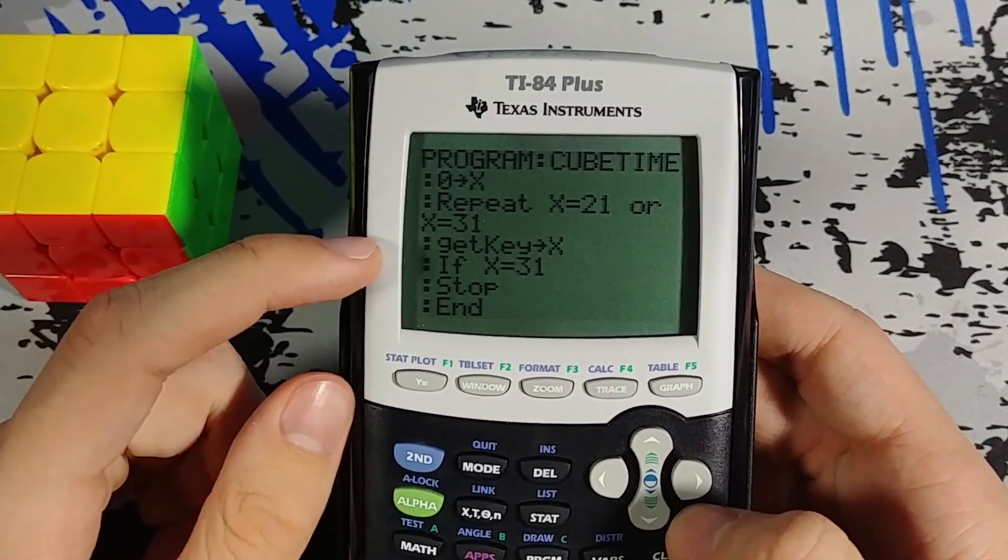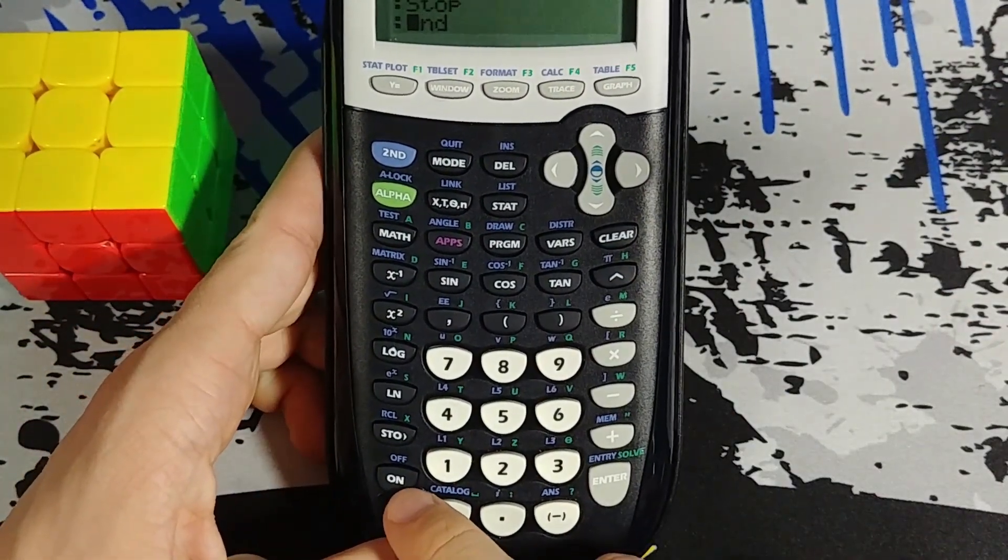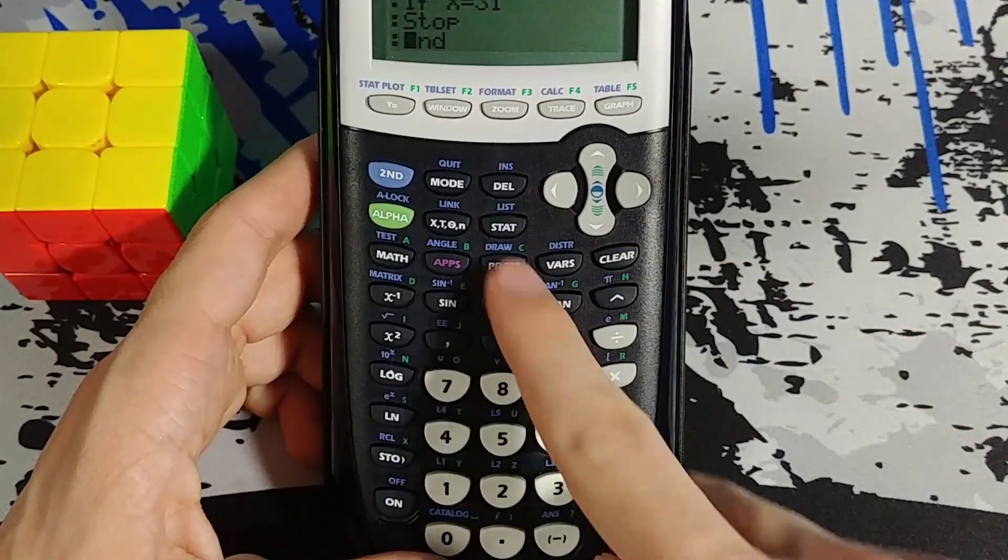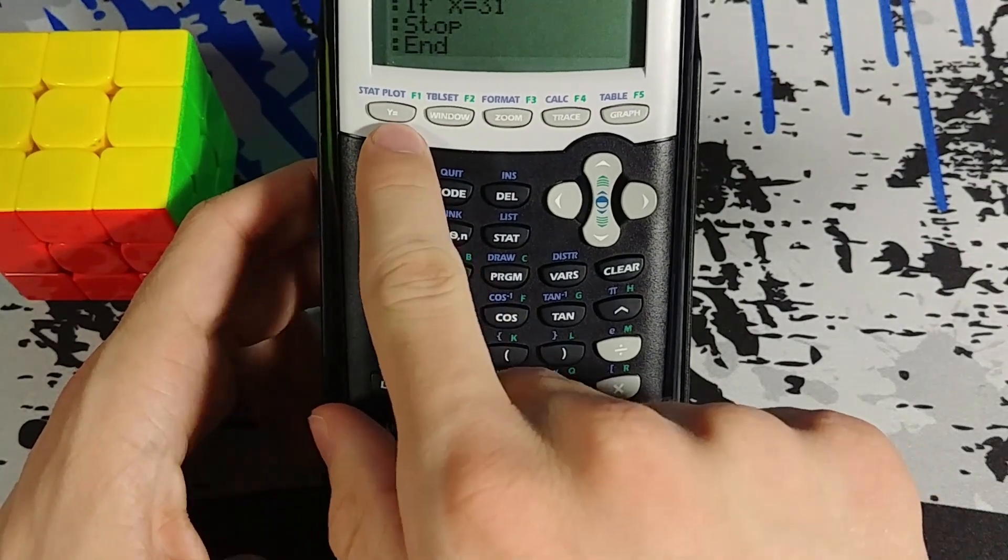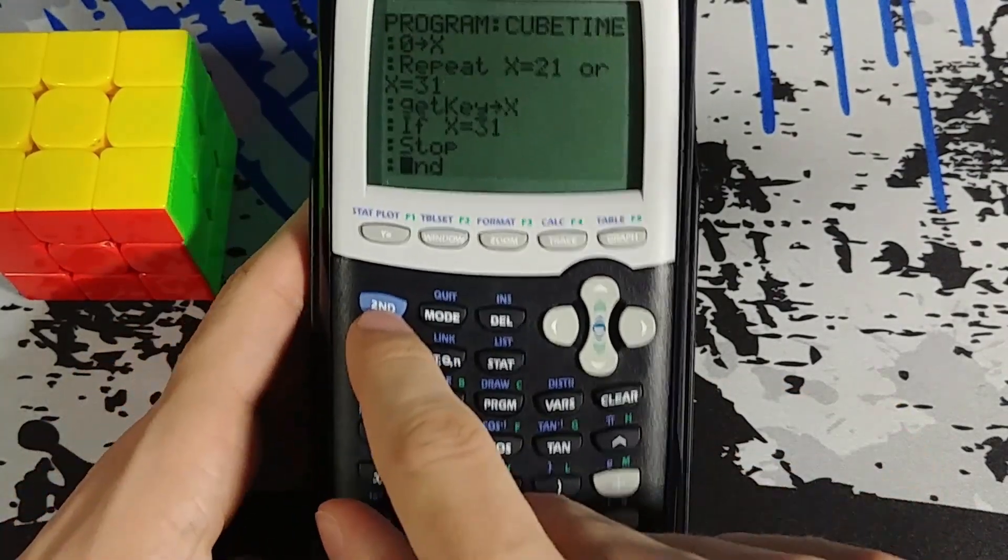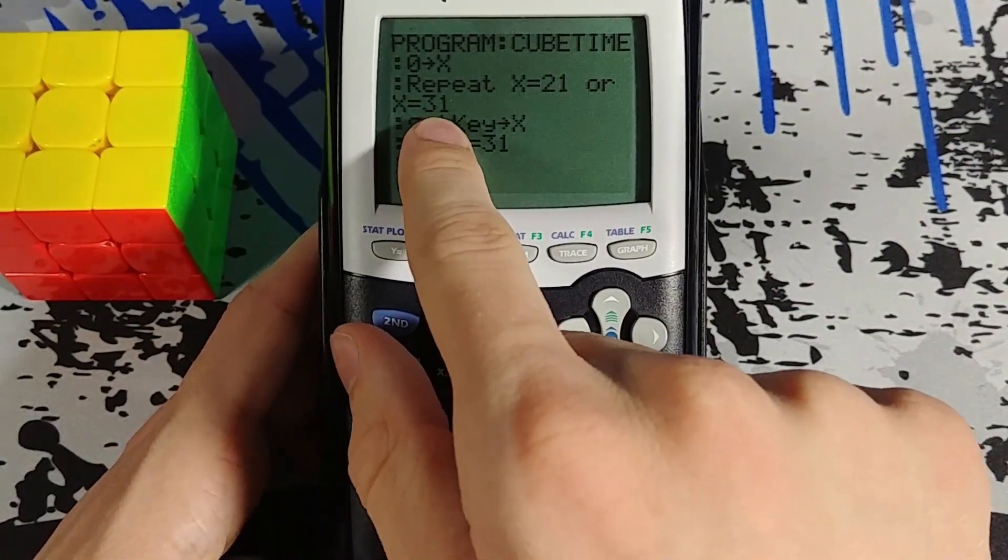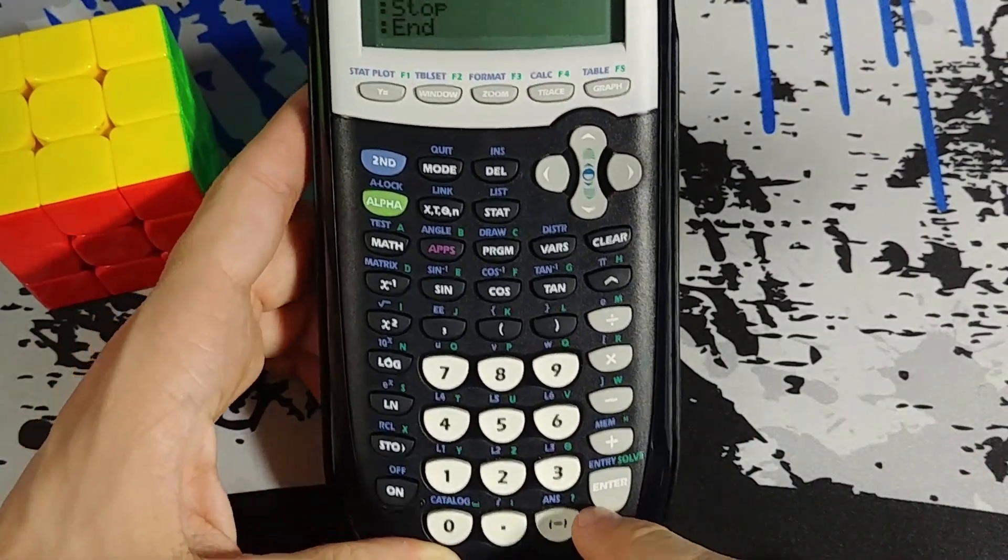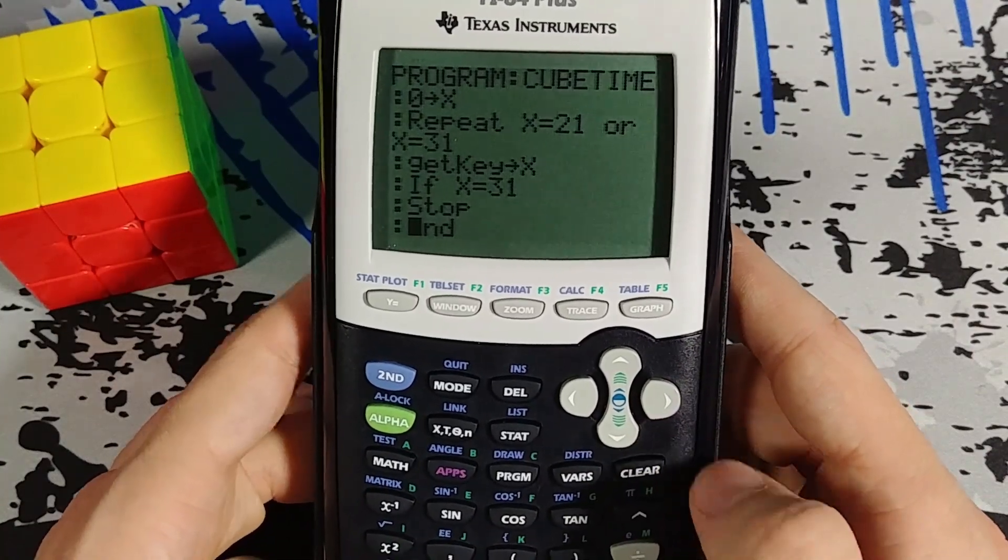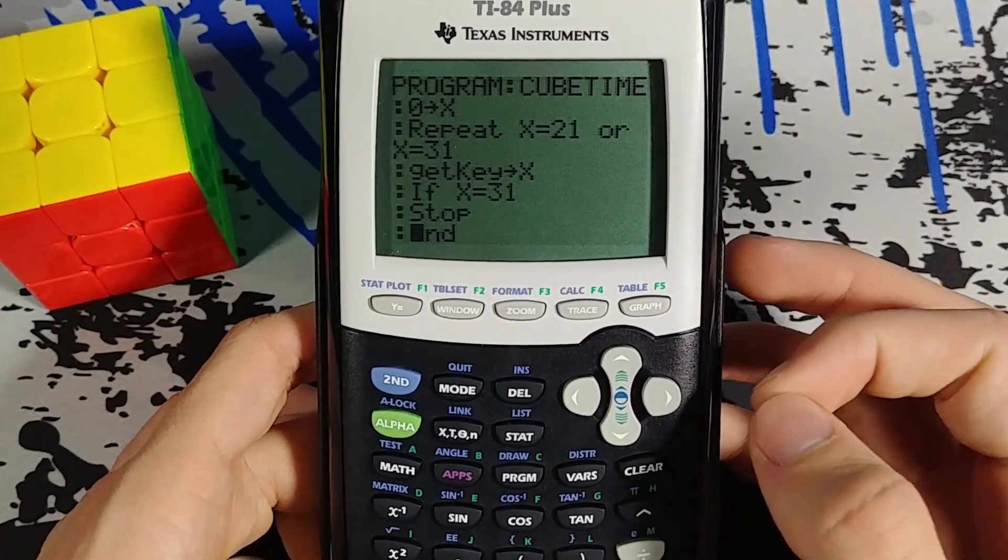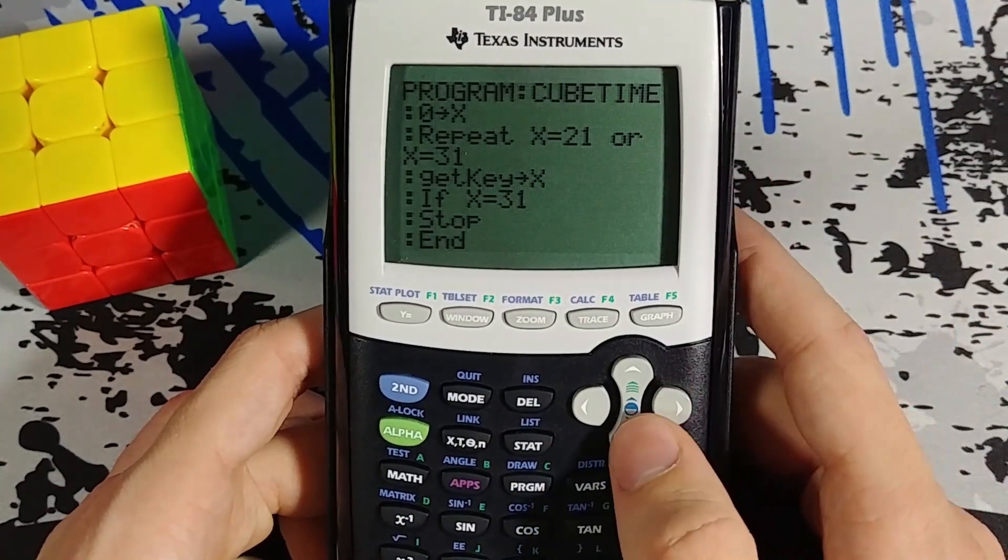And it's going to ask me get key. So each of the keys on here, besides the on button because that breaks programs, all of them are assigned a number based on the row and column. So this is row one, column one, so it's 11. Row two, column one is 21. Row three, column one is 31. And then enter is 105. So that's kind of how the key system works. And basically what it's going to do is whenever I click a key, it's going to put that number into the x variable. So until x is set to one of these numbers, the program won't continue.